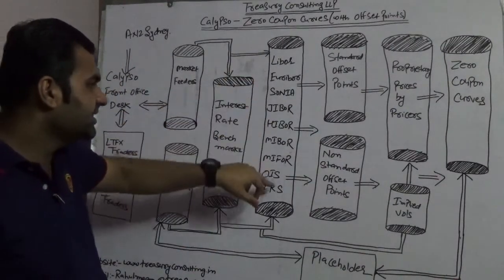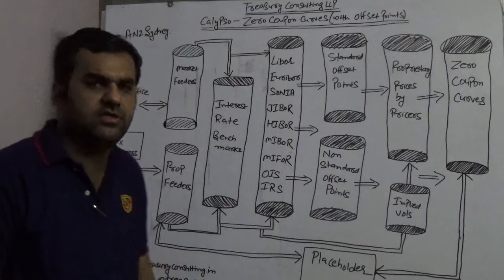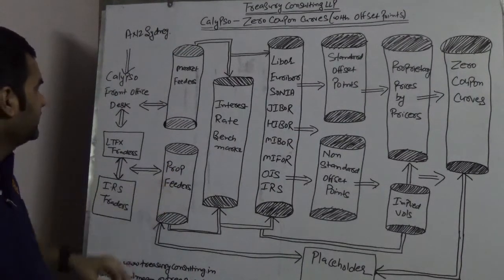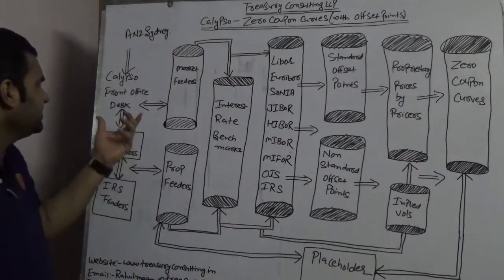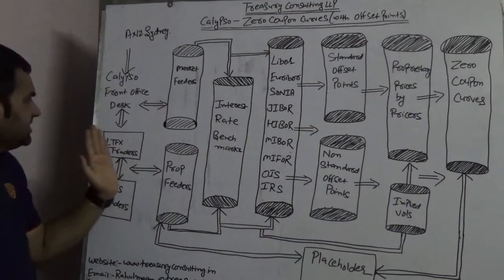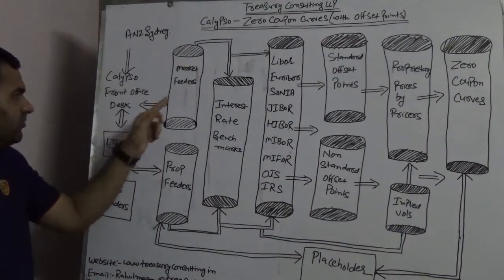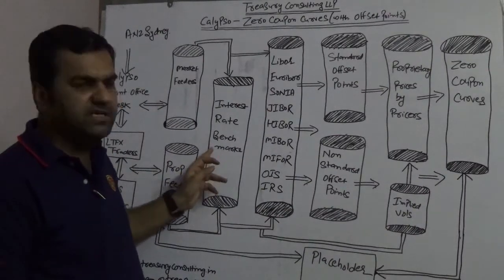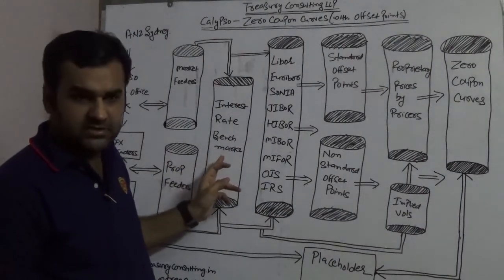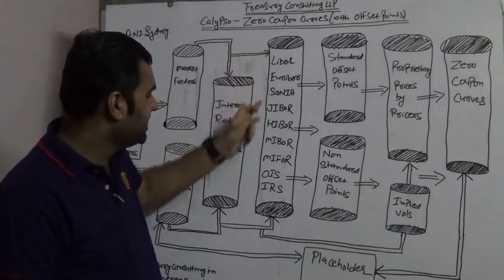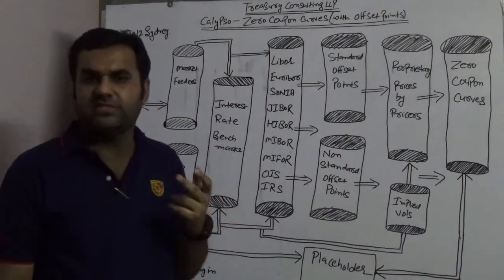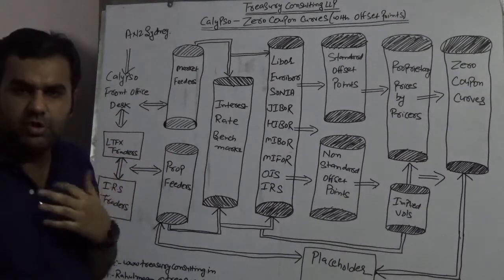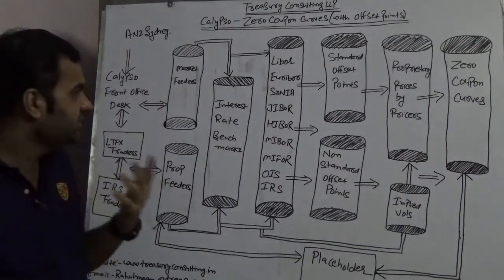These interest rate benchmarks are sometimes fed by both market feeders and prop feeders. So this front office desk is connected with two feeders — market feeders and prop feeders — and both are connected with interest rate benchmarks. LIBOR, for instance, is in five currencies and 15 denominations, EURIBOR is the Euro interbank offered rate, and so on.